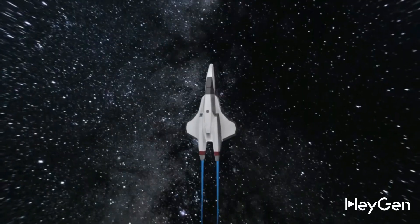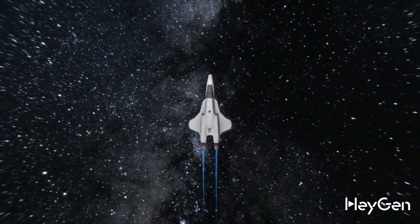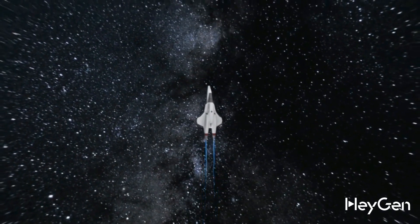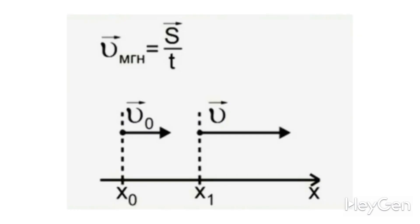We know four dimensions, and alongside the three spatial dimensions, there is always a temporal dimension. This means that any physical process must have some speed — this is exactly the metric that defines the behavior of this process in the temporal dimension.